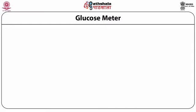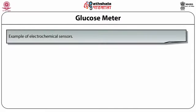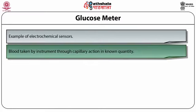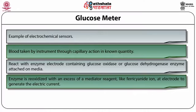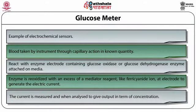The glucose meter is an example of an electrochemical sensor where a certain amount of blood is taken through capillary action. The blood reacts with an enzyme electrode containing glucose oxidase or glucose dehydrogenase enzyme attached on a mediator. This enzyme is re-oxidized with an excess of mediator agent like ferricyanide ion at the electrode, generating an electric current detected as the concentration of glucose in the blood. It is the most successful biosensor currently available in the commercial market.